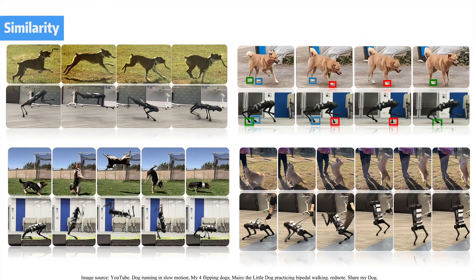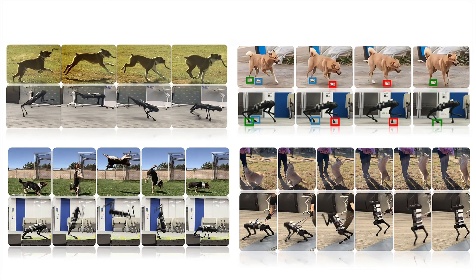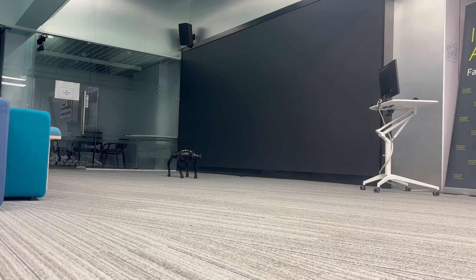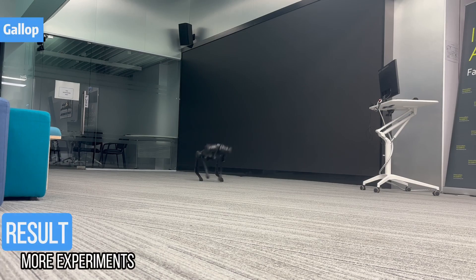Comparing the source video with real-world robot experiments, we observe that the robot performs lifelike animal motions, and the pipeline is robust enough to handle various animal motions. Here are more experiments.